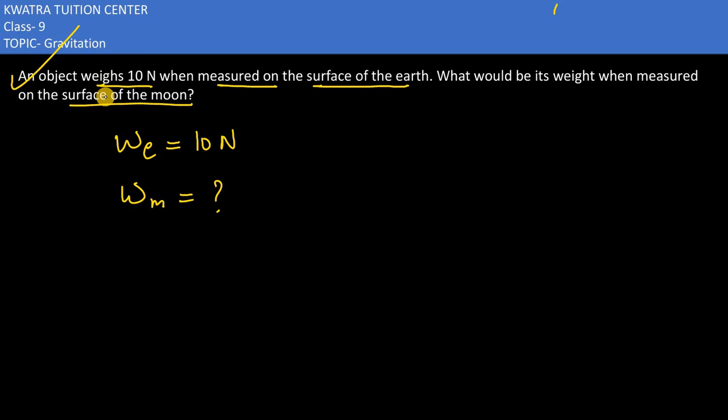Now what is the relation between them? Weight on moon would be equal to weight on earth divided by 6. That's the formula. So here in this case put the value of weight on earth that is 10. 10 divided by 6.